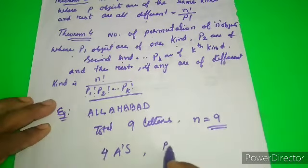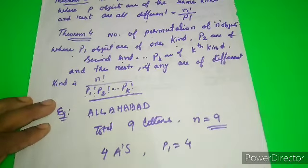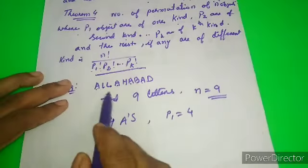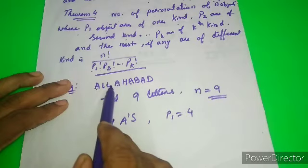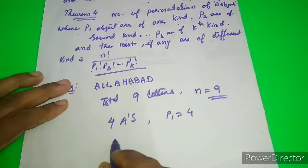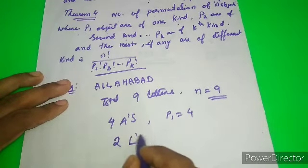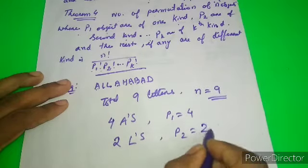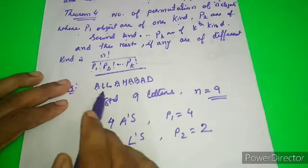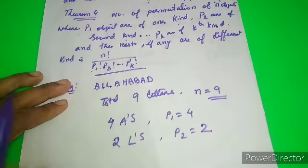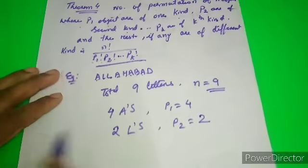I can see L appears 1, 2, two times. So p2 equals 2. All the other letters appear only once. Now what's the total permutations?